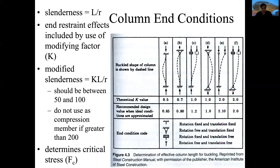Something very important when we speak about a column is the end condition. A column is not just in the air — it is fixed in the ground, and it may have some kind of element in the superior part, like a cap, a beam, or be attached to a roof, or maybe be free at the top. In the inferior part, we always have some ground attachment. If not, the column would just fall down.